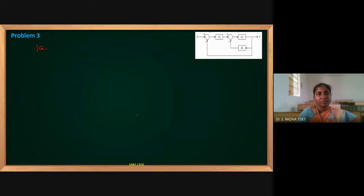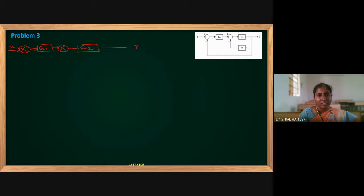So I have G1. After G1, one summing point, and after the summing point G2, and here is output Y. Before G1, one summing point. Input is X. Whatever notation is given in the question, we have to use as it is — we cannot change the notations. H1 is present, connected to this summing point, with a negative sign. It starts from this branch point.